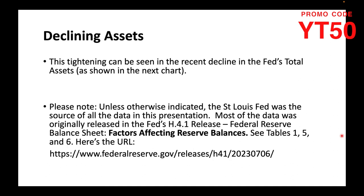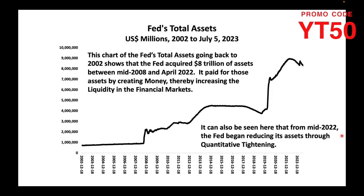This tightening can be seen in the recent decline in the Fed's total assets. This chart shows the Fed's total assets going back to 2002. As you can see, the Fed acquired $8 trillion of assets between mid-2008 and April 2022. It paid for those assets by creating money, thereby increasing the liquidity in the financial markets.